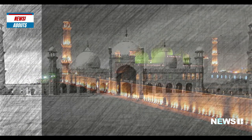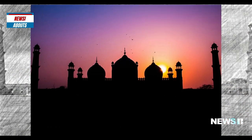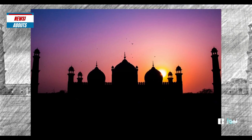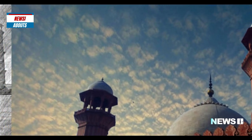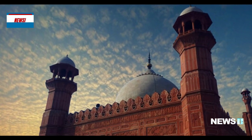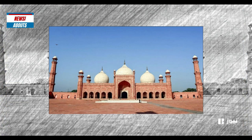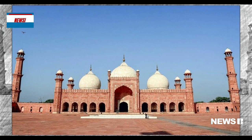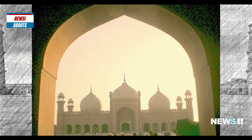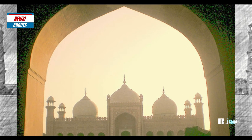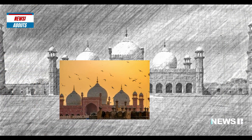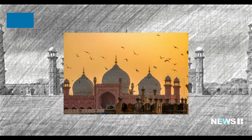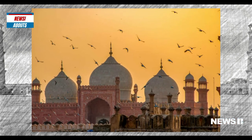The construction of the mosque took two years to complete, from 1671 to 1673. The materials used included red sandstone and marble, brought in from various parts of India. The mosque's main prayer hall measures 276 feet by 80 feet and is topped by three domes. The central dome is the largest, measuring 65 feet in diameter and rising to a height of 49 feet.